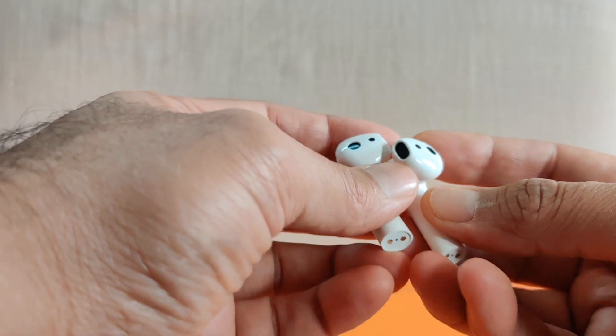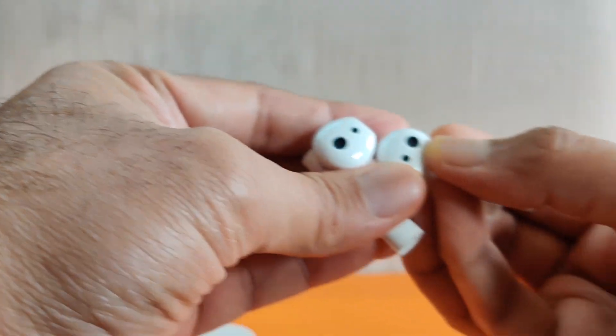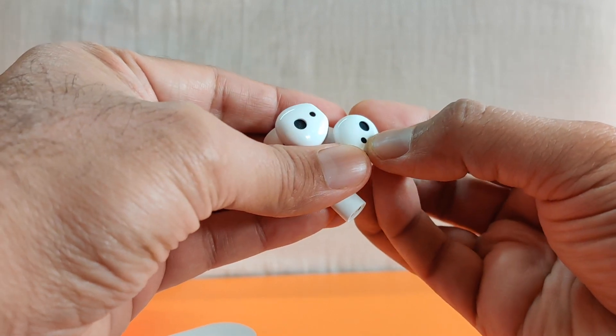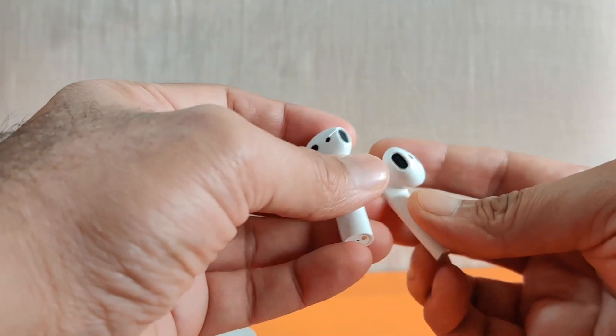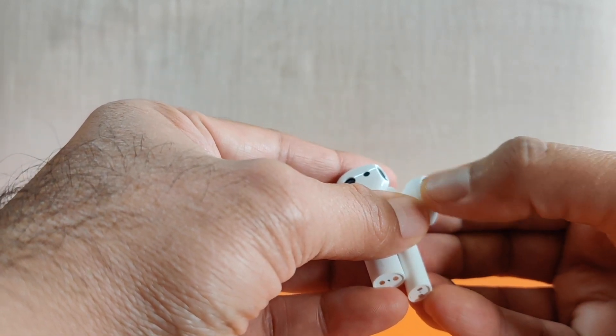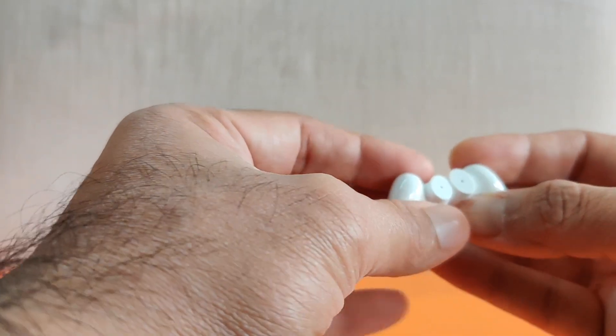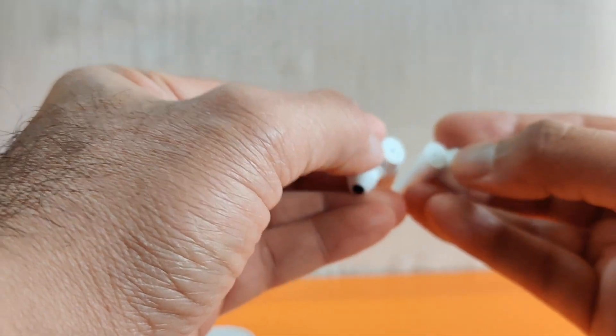And as you can see it has some sensors over here. There are two dots that you can see. First one is a mesh. The second one is a dot which is a sensor which detects whether it is inside your ear. And this large portion is actually facing your ear canal when you put it on. And on top of these you can see these two holes.